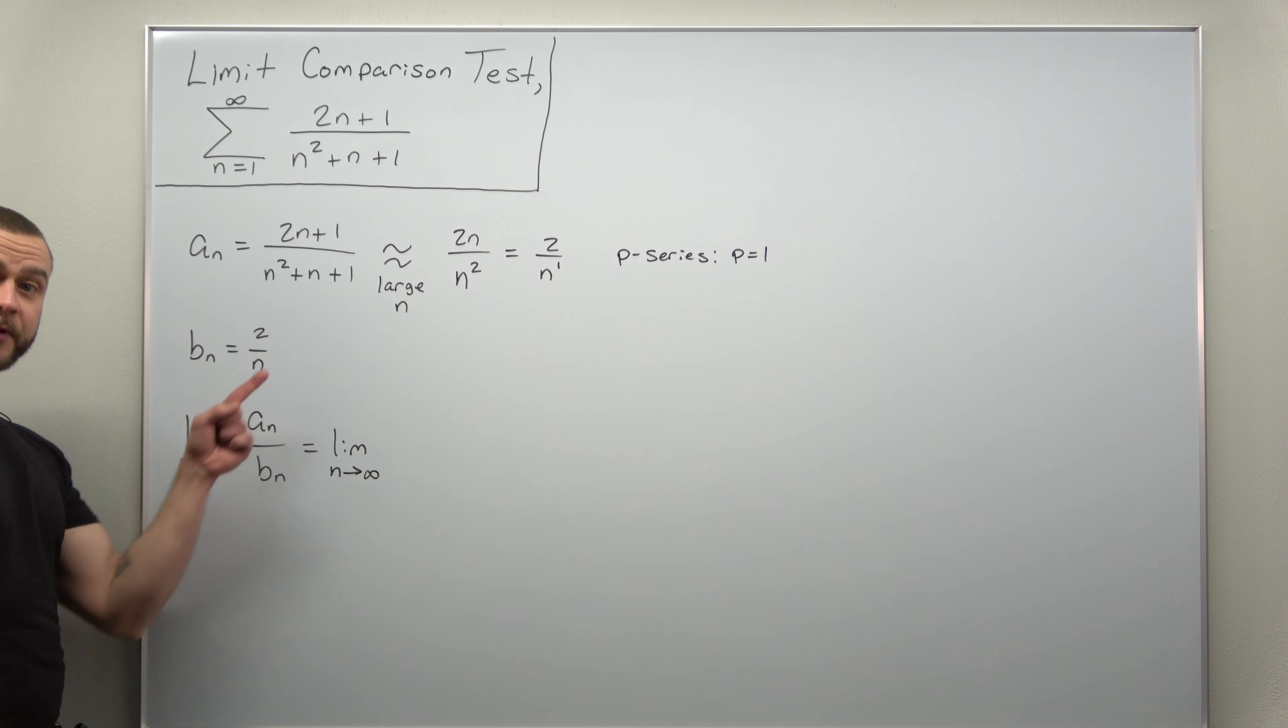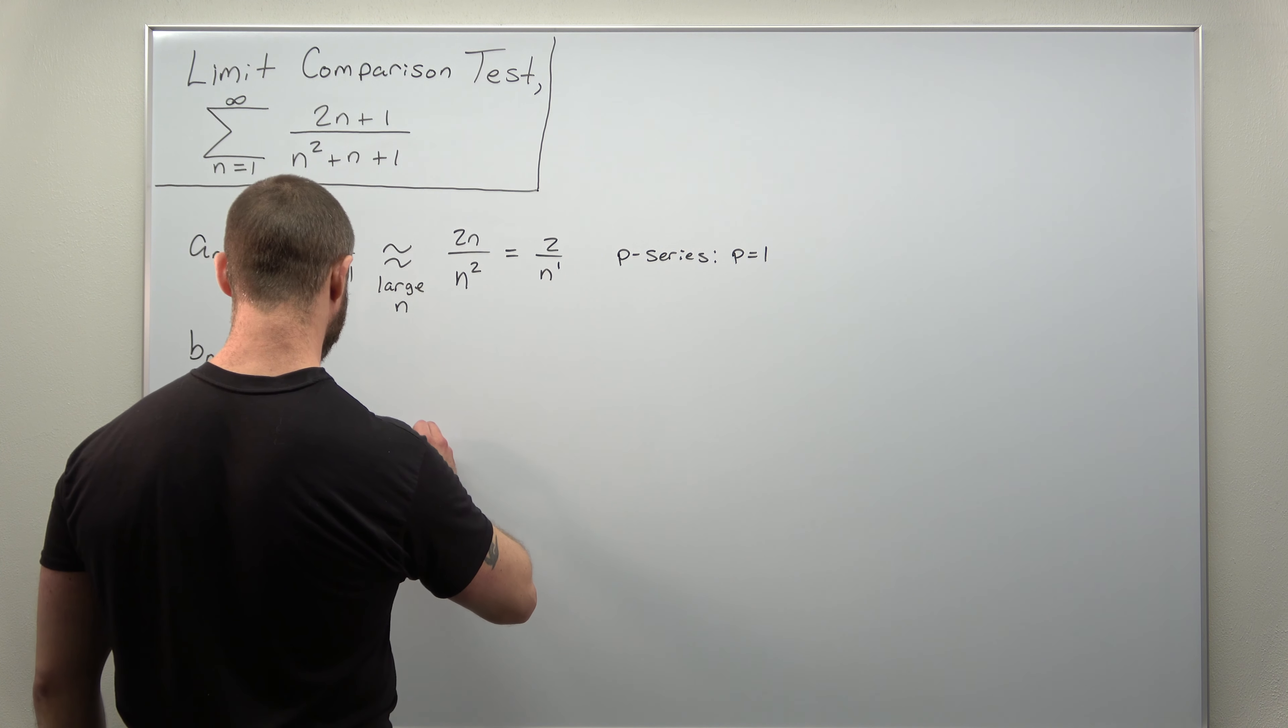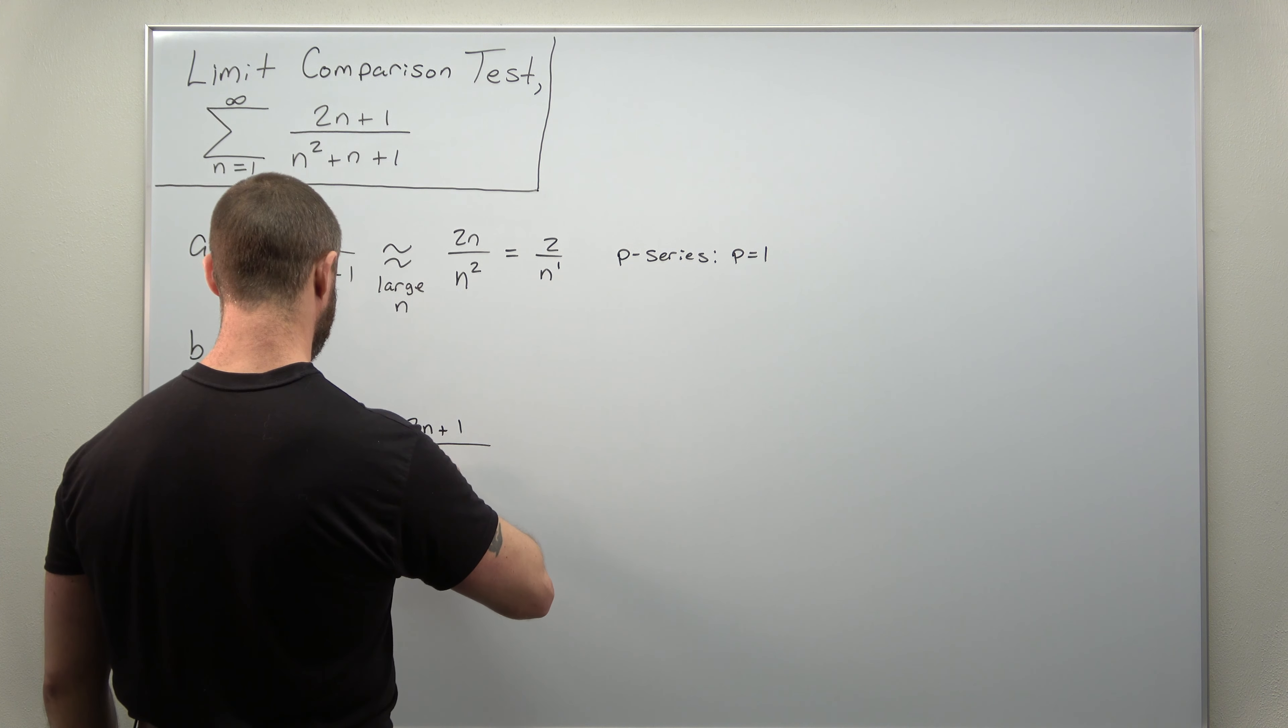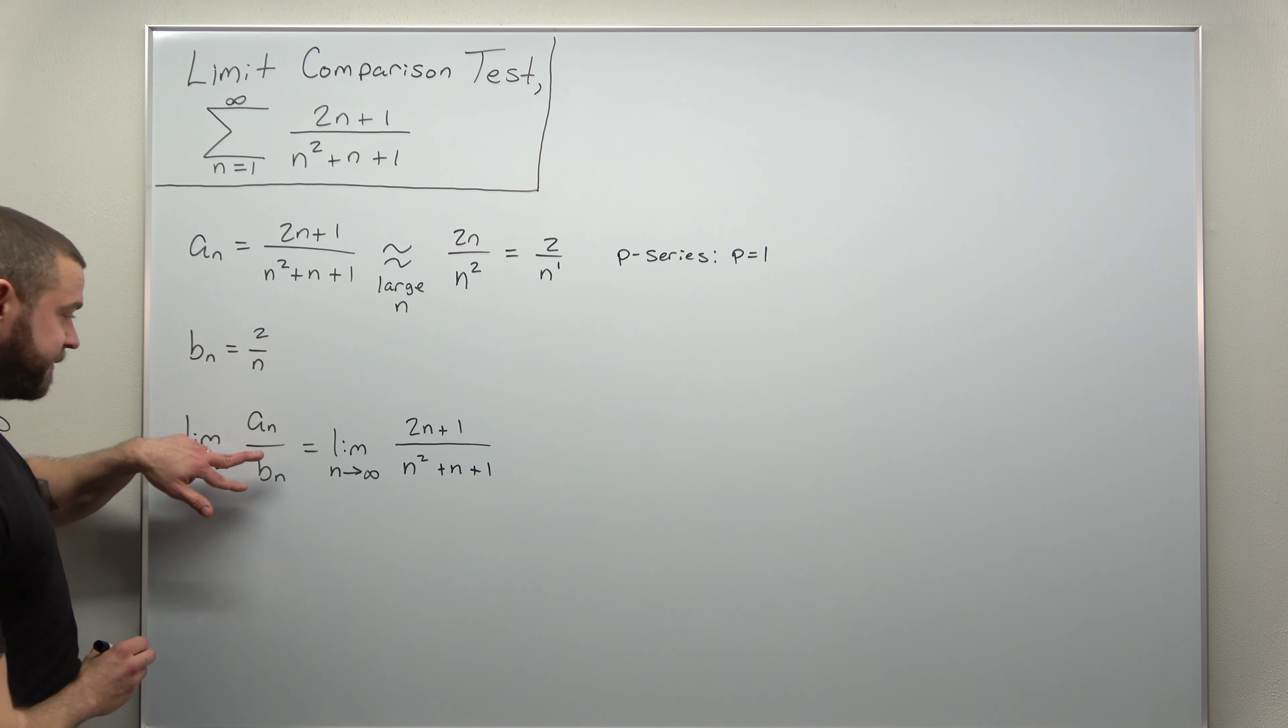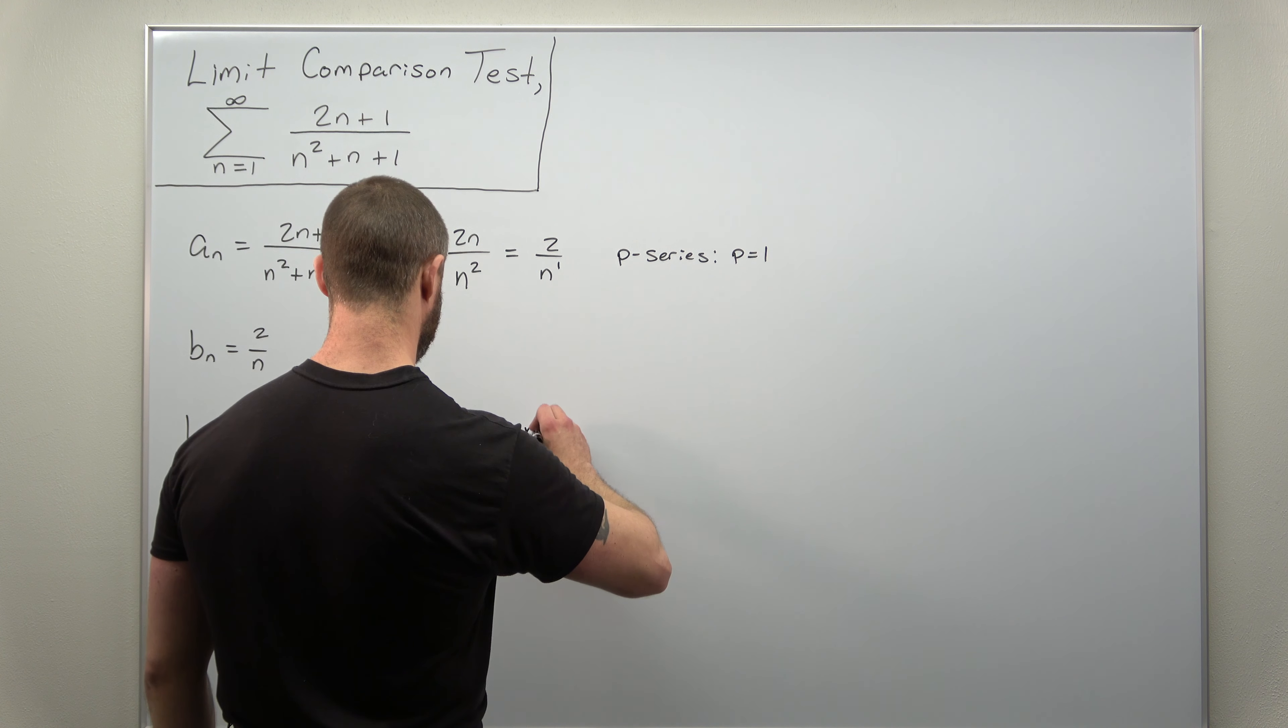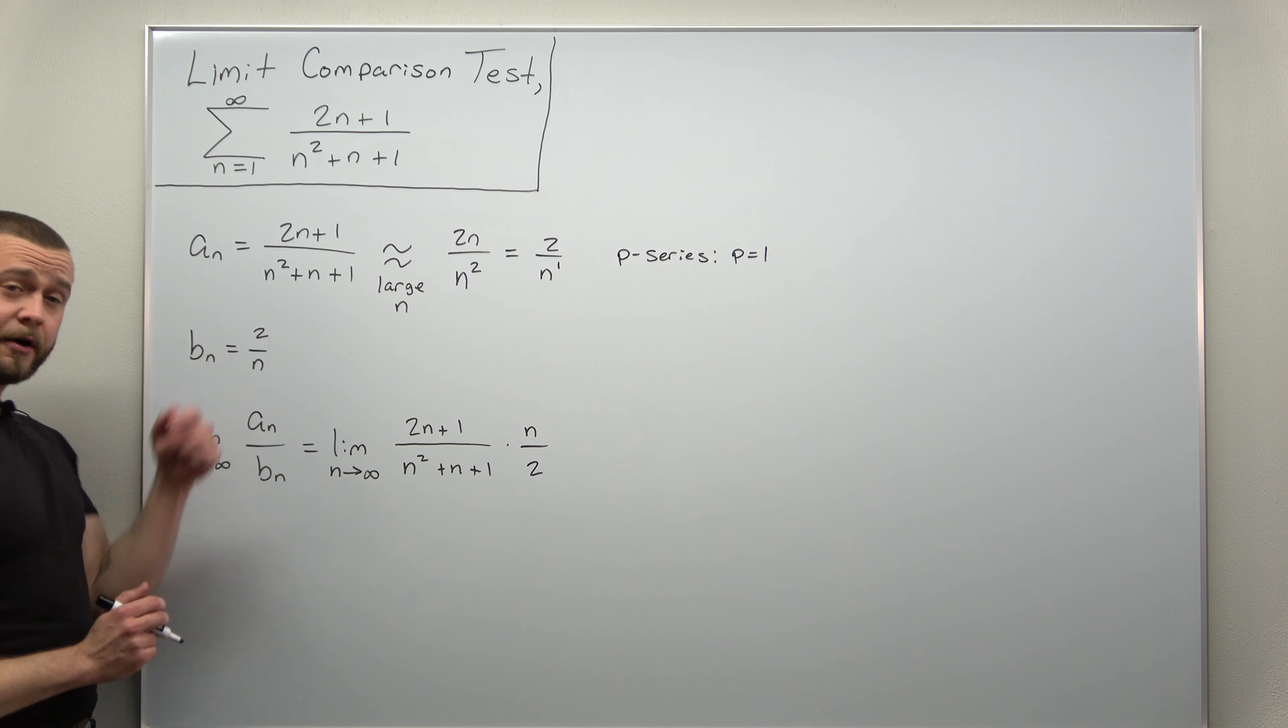And again, since we're working with fractions, I'm going to use the trick of multiplying by the reciprocal here instead of dividing by that fraction. So we're going to keep the numerator the same, a_n. And now instead of dividing by b_n, I'll multiply by the reciprocal, multiplying by n over 2.